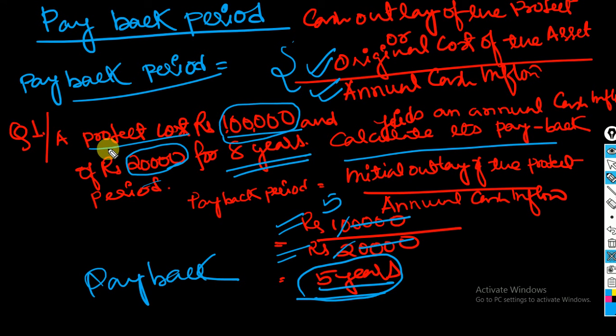So here you can see, there is a position that the A project cost rupees one lakh. So I have to use, and once it generates an annual cash inflow of payback period.